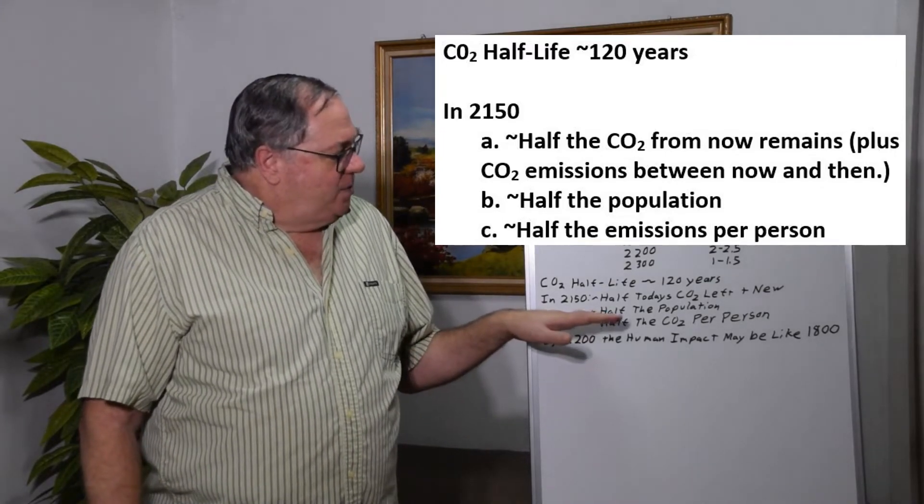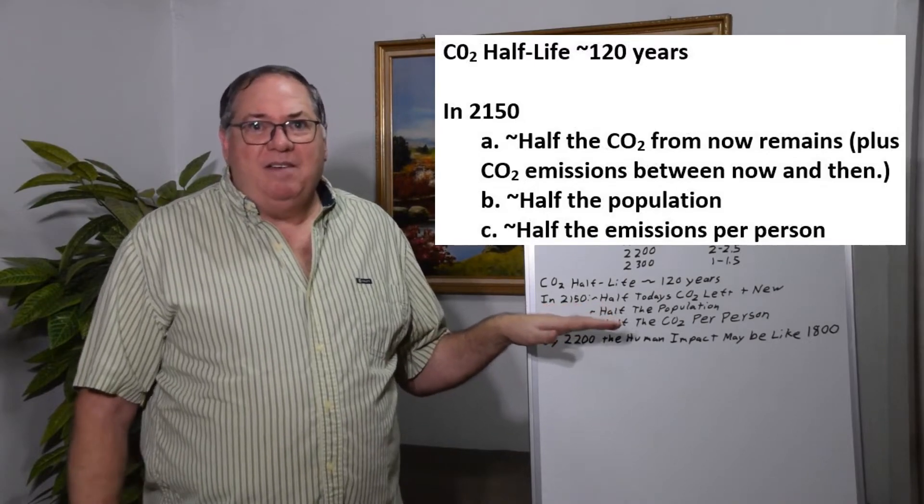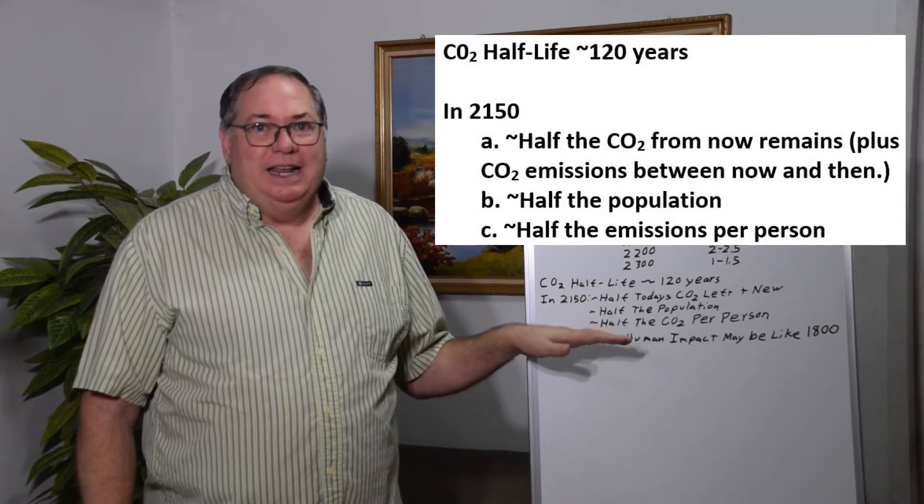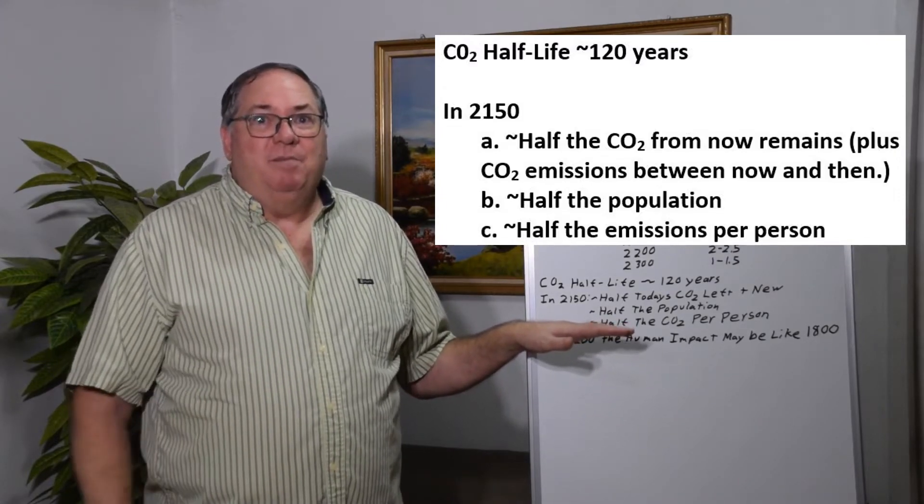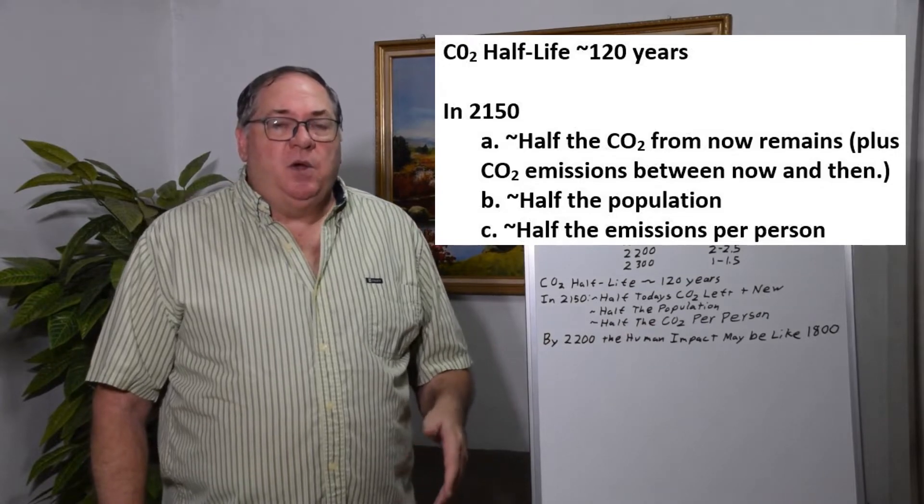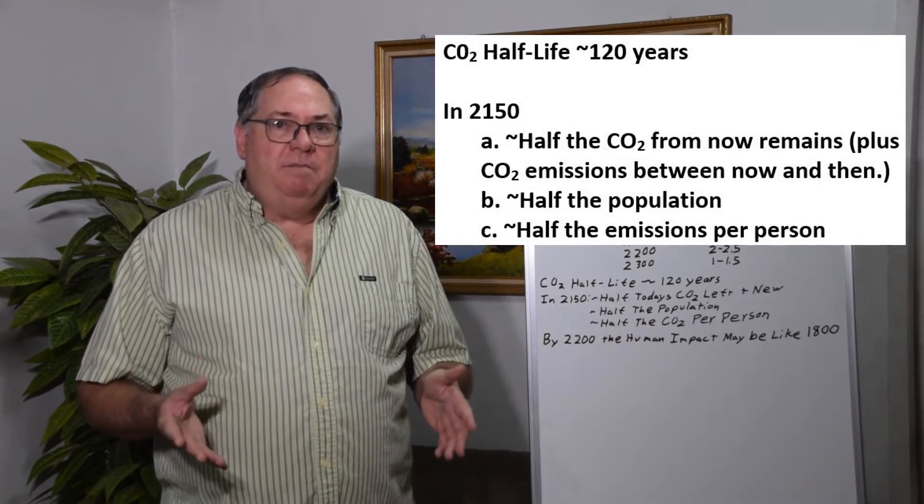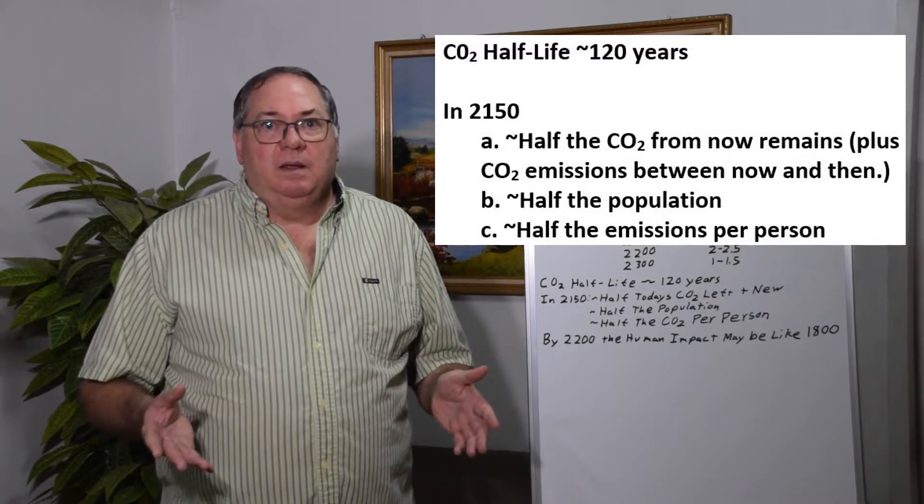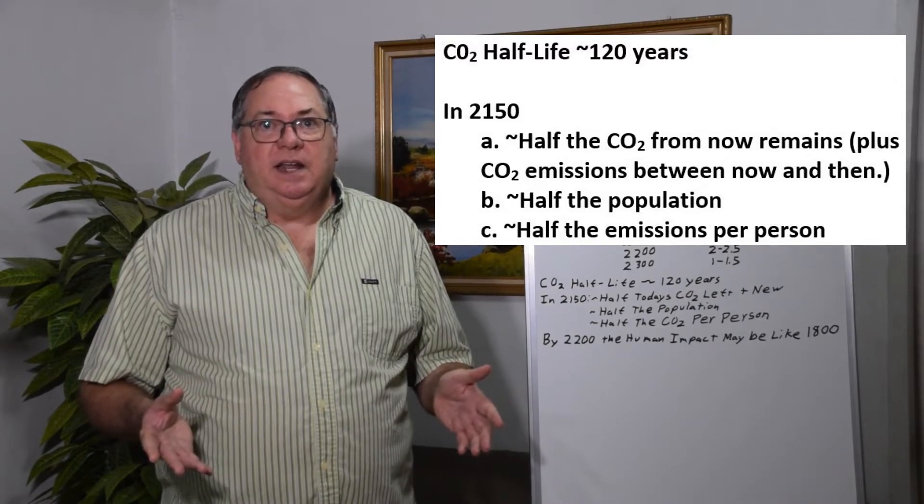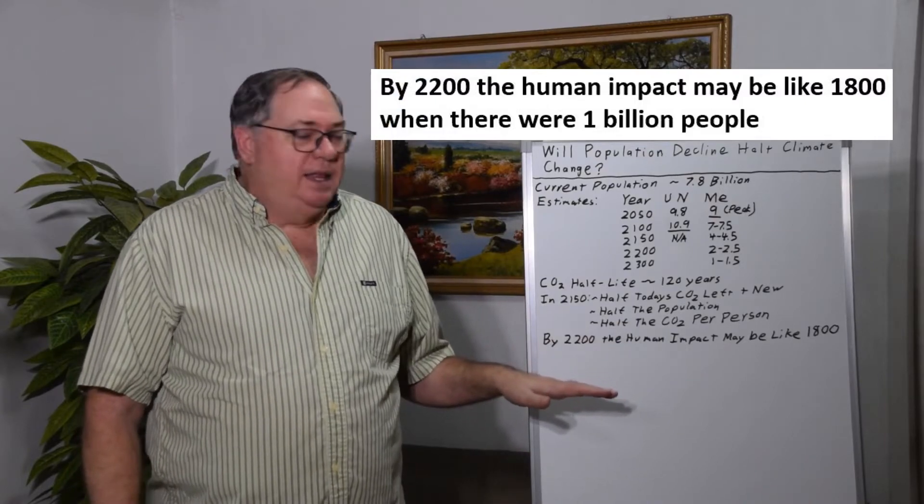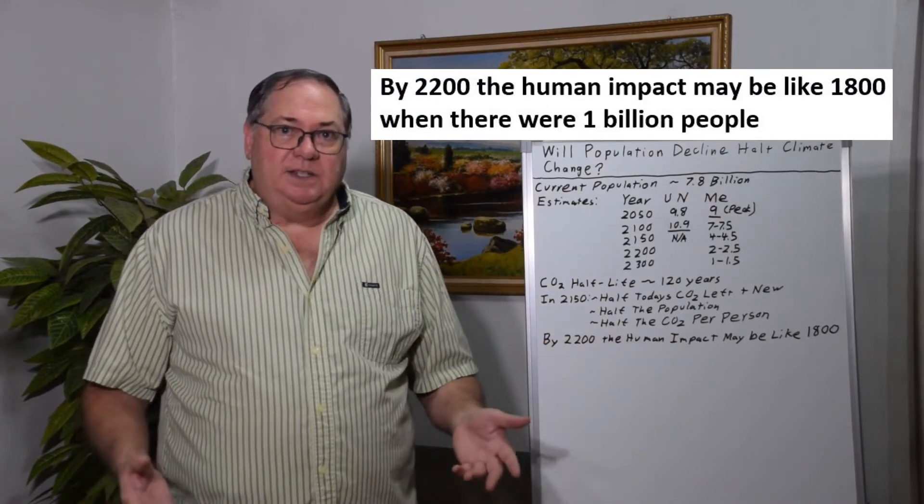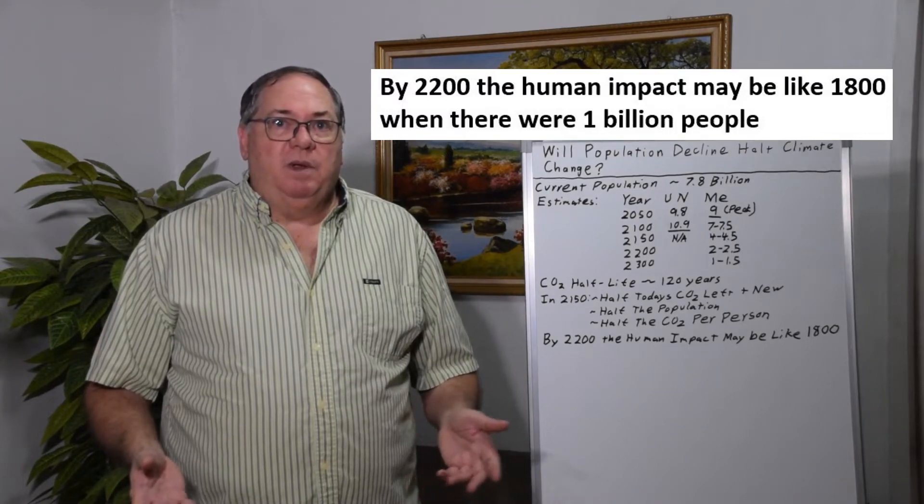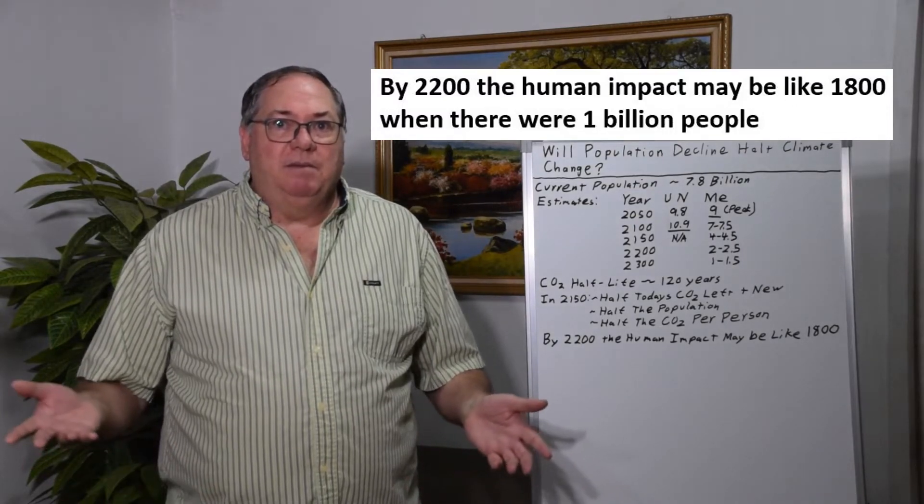But by 2150, the population will be roughly half what it is today and hopefully half as polluting. You can put your number on it, whatever it happens to be. So the human impact on the Earth will be much lower in 2150 than it is today. And then by 2200, the impact may be consistent with what it was in 1800, which is when we first passed the 1 billion population mark.